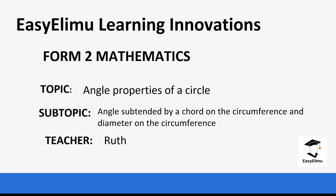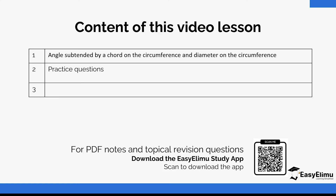Welcome to EZLE Learning Simplify. My name is Ruth and today we are going to be learning Form Two Mathematics. Our topic for today is angle properties of a circle. We are going to look at the angle subtended by a chord on the circumference and an angle subtended on the circumference by a diameter — how they behave and how we can derive that specific angle.